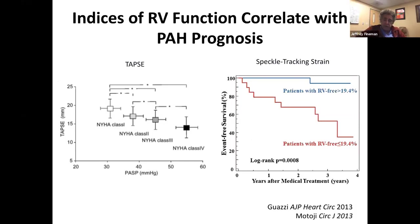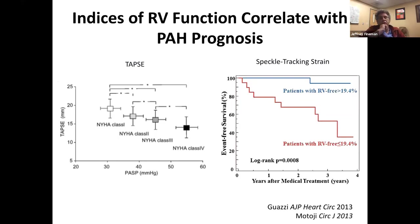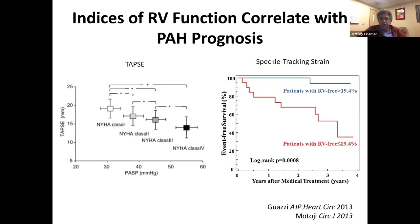Why some RVs tolerate resistance better is an important area of investigation, because all therapies to date are really based on lowering pulmonary pressures and vascular resistance. There's really nothing targeting the right ventricle. That's a whole area of research that needs to be done and could lead to major therapeutic breakthroughs.